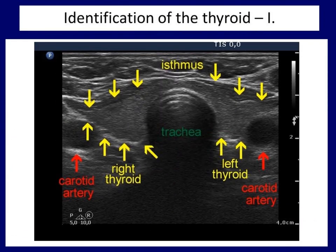The horizontal section of the thyroid is presented in the image. Two anatomical structures are of help in identifying the thyroid gland: the left and right carotid artery and the trachea. The ultrasound wave cannot pass through the cartilaginous wall, so caudal to the trachea there is a dark band. The two lobes of the thyroid are located between the arteries and the trachea. As in this case, the right lobe is usually larger than the left one.